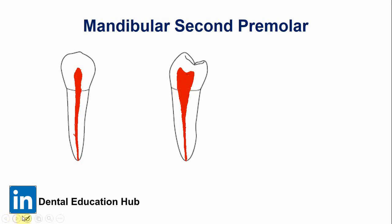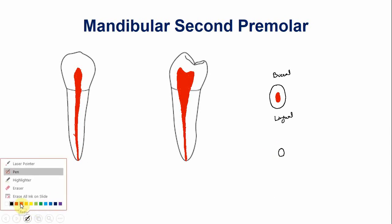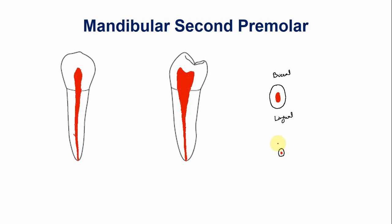Now let's discuss the cross-section of the root. In the cervical portion, the cross-section of the root is oval in shape. The pulp canal is also oval in shape and is nearly centered within the root. In the apical portion, the root is nearly rounded and the canal is also rounded in shape.